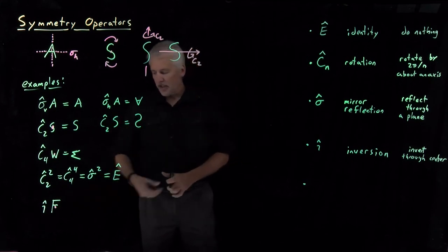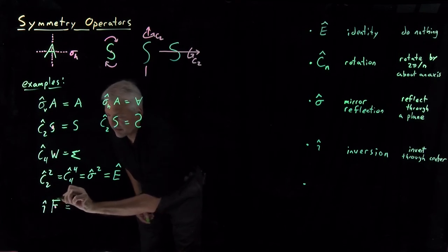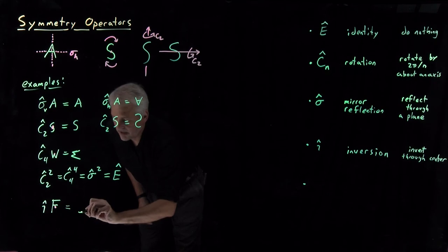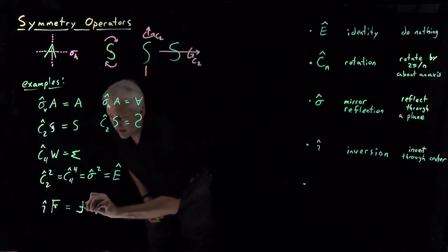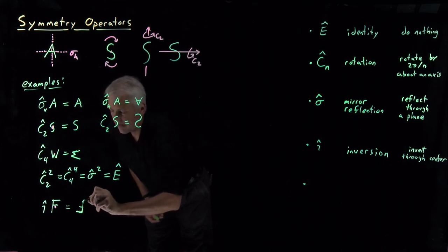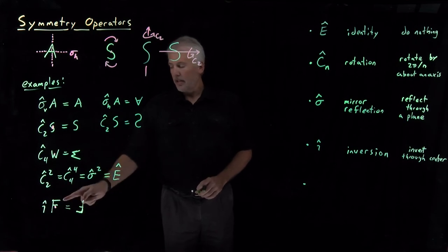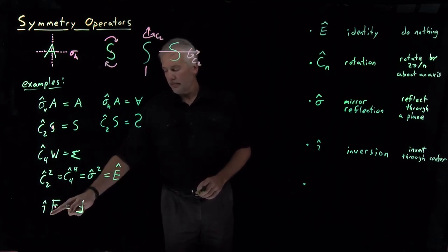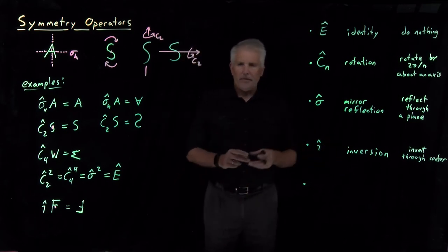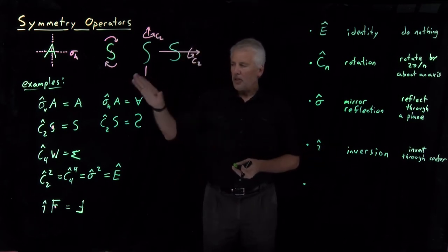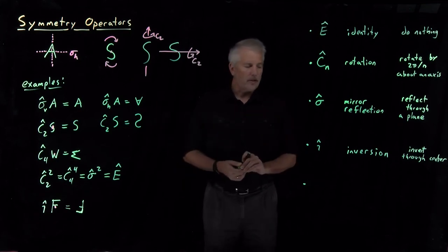For example, taking the inversion operator acting on the letter F: the center of the letter is wherever the geometric center is. The parts of the letter in the top-left get flipped through the center and end up in the bottom-right; the top-right flips through and becomes the bottom-left. The molecule collapses on itself and comes out the other side. What I get is an inverted letter F — top-left became bottom-right, top-right became bottom-left, and so on. This can be difficult to visualize, especially in three dimensions.